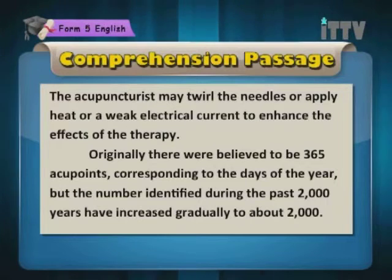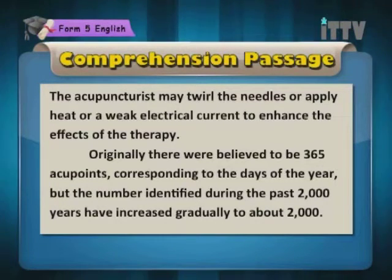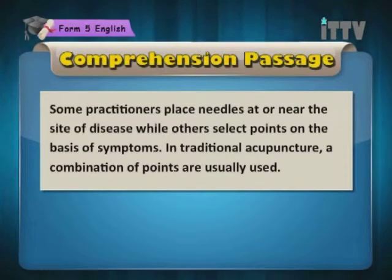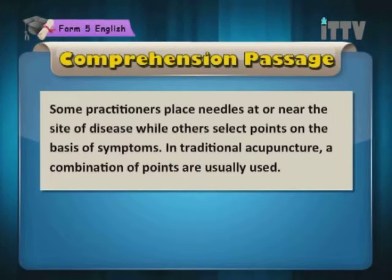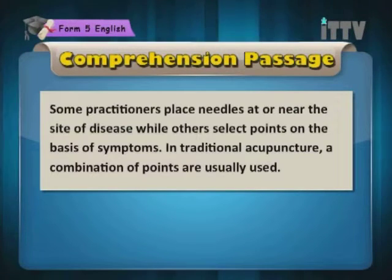Originally, there were believed to be 365 acupoints corresponding to the days of the year, but the number identified during the past 2,000 years has increased gradually to about 2,000. Some practitioners place needles at or near the site of disease while others select points on the basis of symptoms. In traditional acupuncture, a combination of points are usually used.